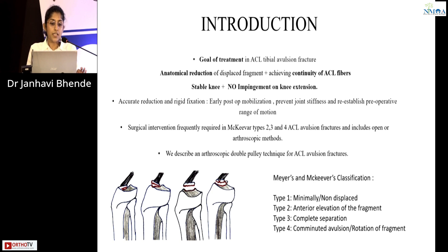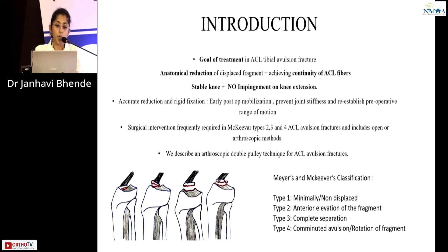Surgical intervention is frequently required in McKeever types 2, 3 and 4 ACL avulsion fractures, and includes open and arthroscopic methods. We describe an arthroscopic double pulley technique for ACL avulsion fractures in this paper.